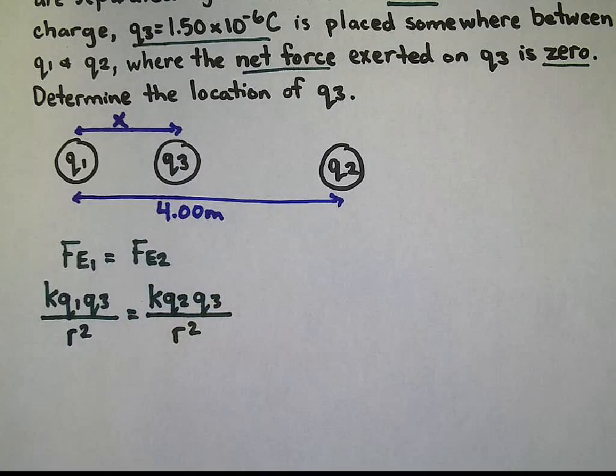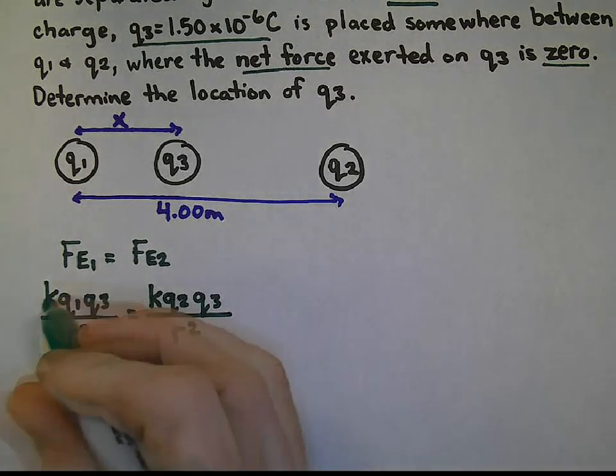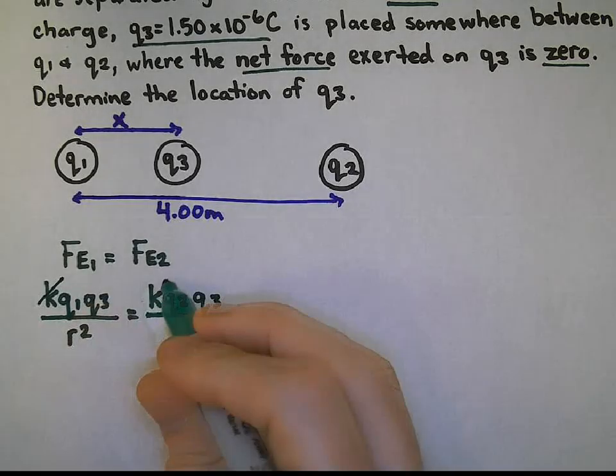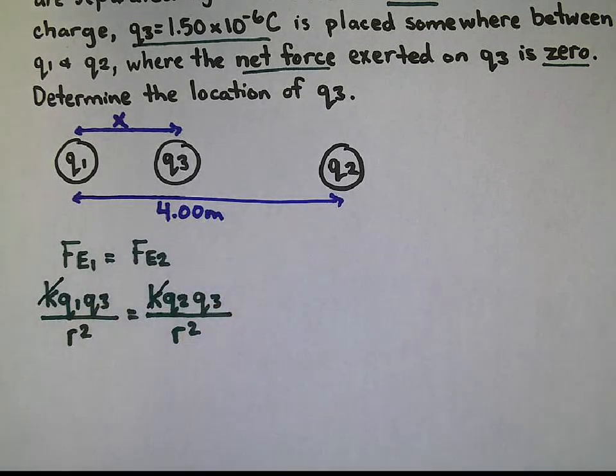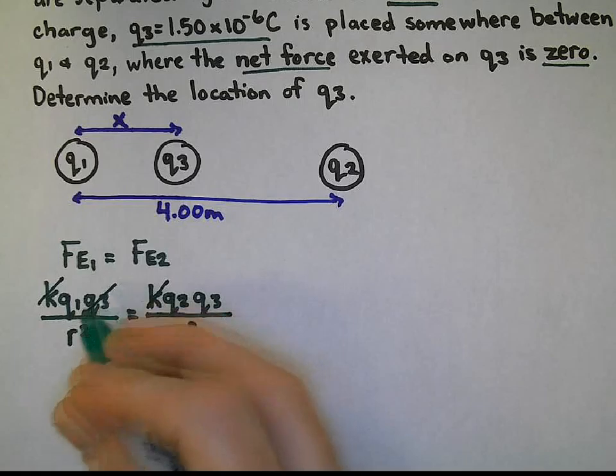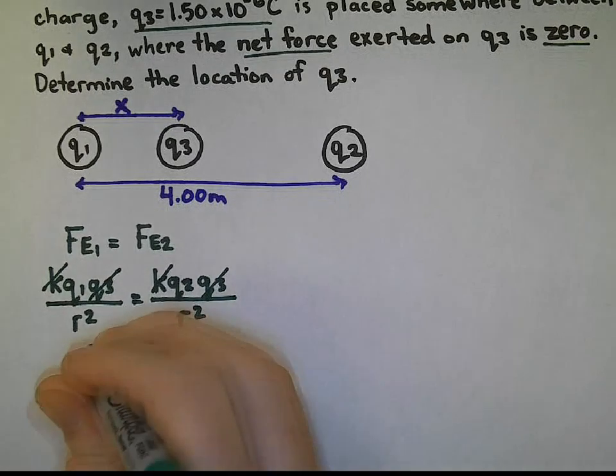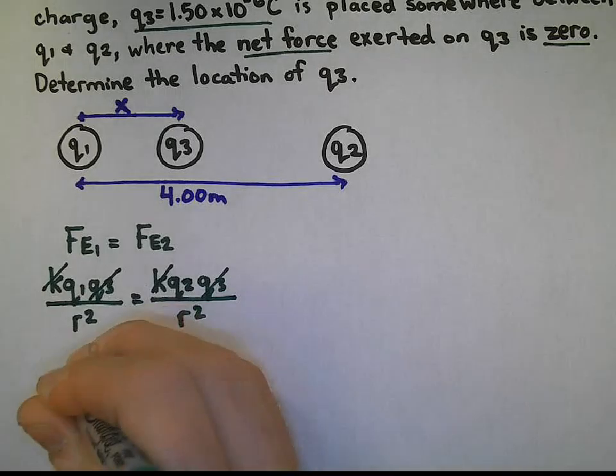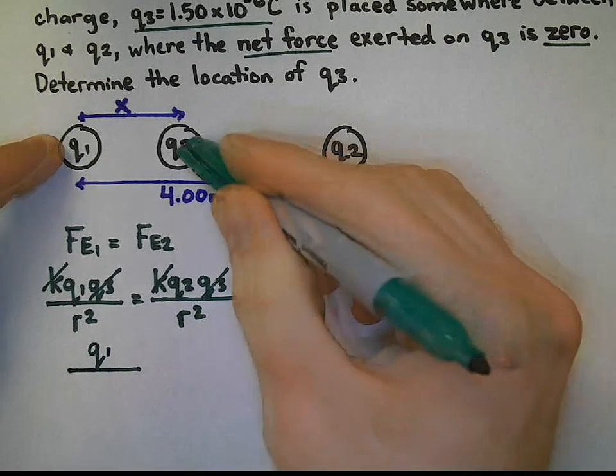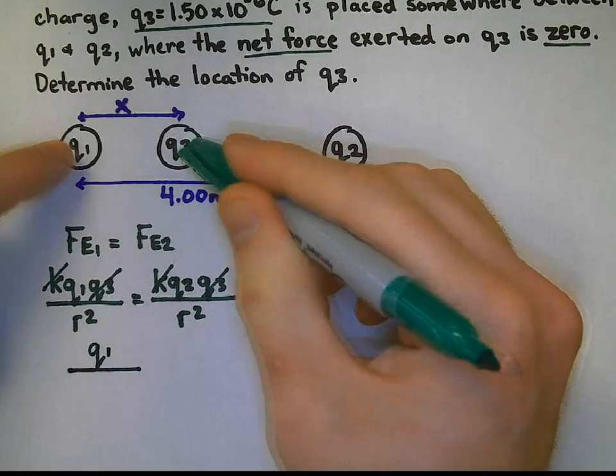And you will notice that we can cancel some things out. Coulomb constant on the left and right-hand side, Q3 on both sides. So we have Q1 all over the distance squared, which we see the distance between Q1 and Q3 is x.